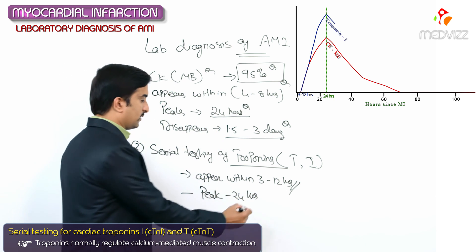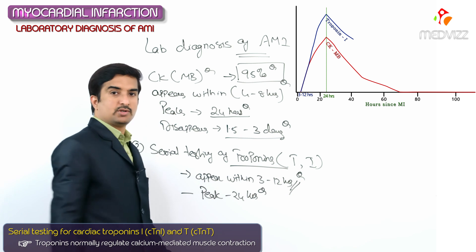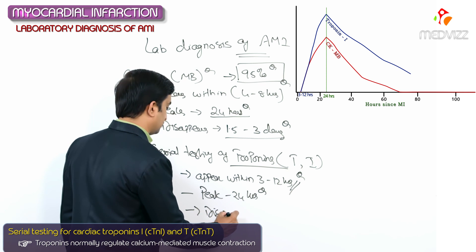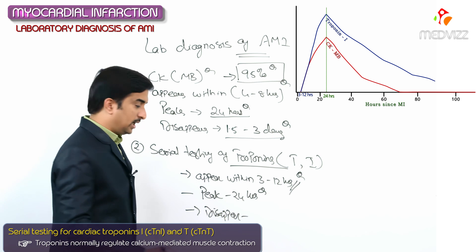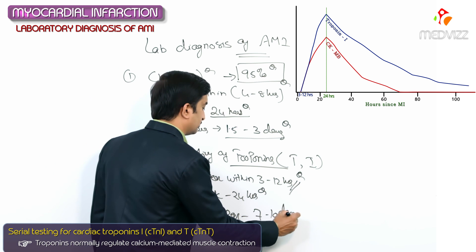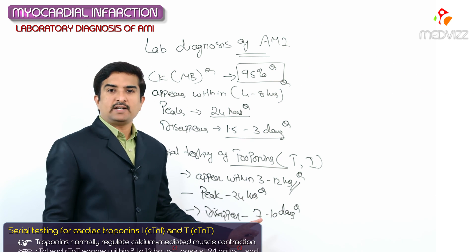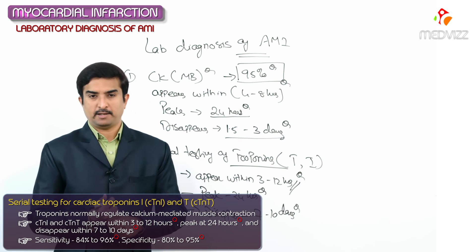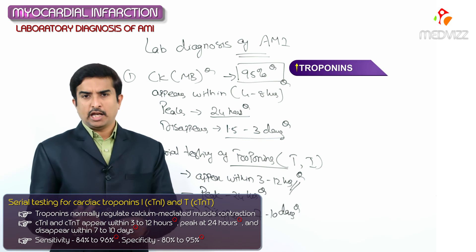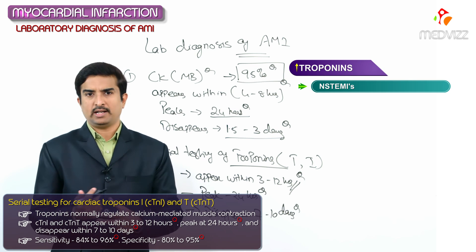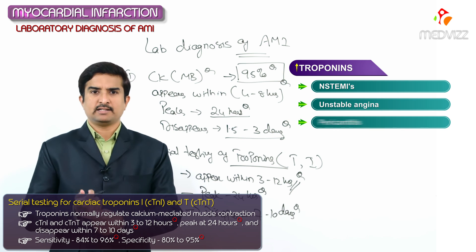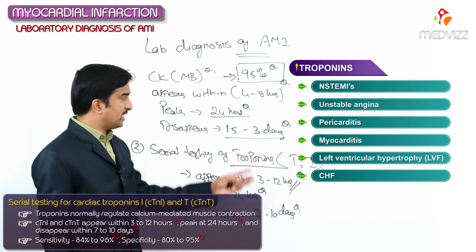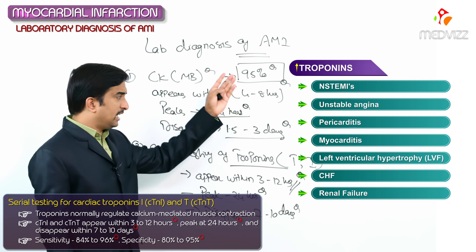Peak values occur at 24 hours — an important MCQ point — and troponins disappear approximately after 7 to 10 days, staying in the blood for longer than CKMB. The sensitivity is 84 to 96 percent and specificity is 80 to 95 percent. Troponins may also increase in non-ST-segment elevation myocardial infarction, unstable angina, pericarditis, myocarditis, left ventricular hypertrophy, congestive heart failure, and renal failure.